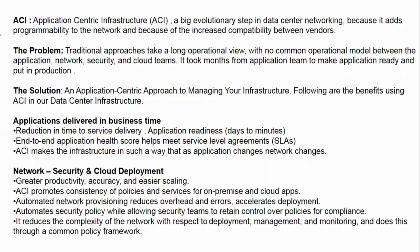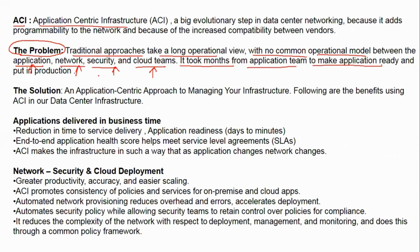ACI stands for Application Centric Infrastructure. The problem with the traditional approach is a long operational cycle with no common operational model between the application, network, security, and cloud teams. Everyone has their own policies, standards, and processes, and it took months for the application team to get an application ready and into production.